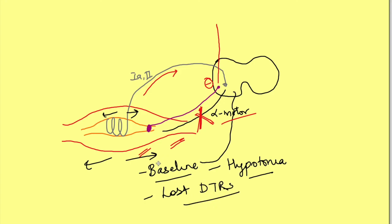Hopefully you have now understood the reason for the different signs in upper motor neuron and lower motor neuron lesions regarding muscle tone and deep tendon reflexes. In summary: in UMN lesion, the inhibitory input to the gamma motor neuron is lost, leading to increased reflex and increased tone; and in LMN lesion, the final common pathway is affected, so input to the muscle is gone, leading to hypotonia and lost deep tendon reflexes.